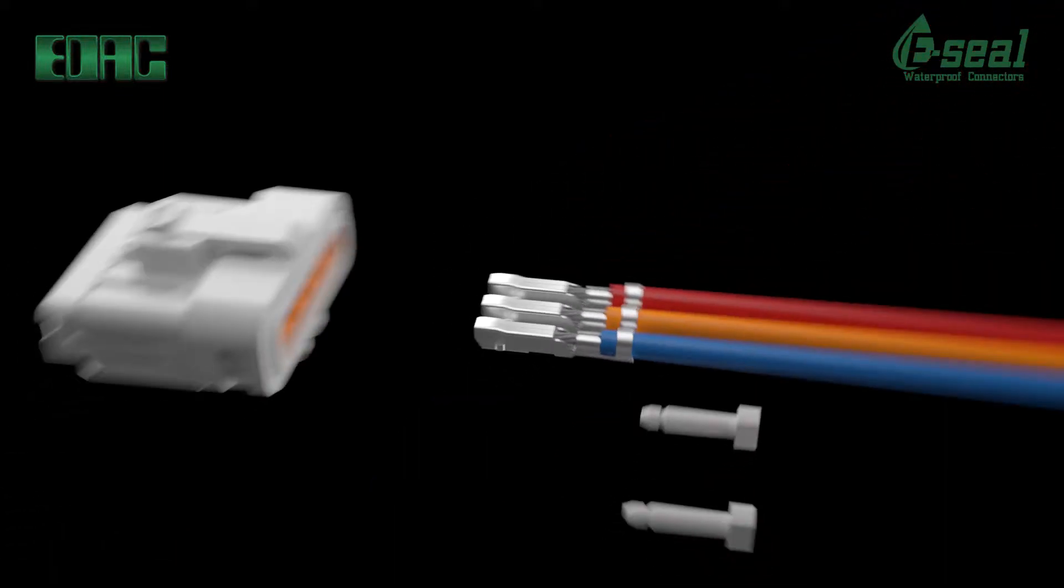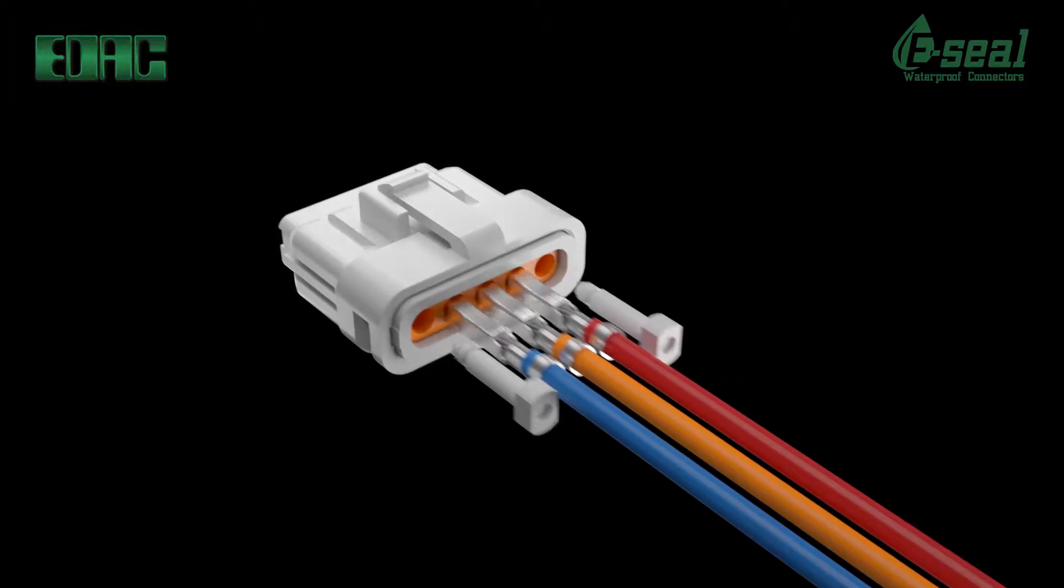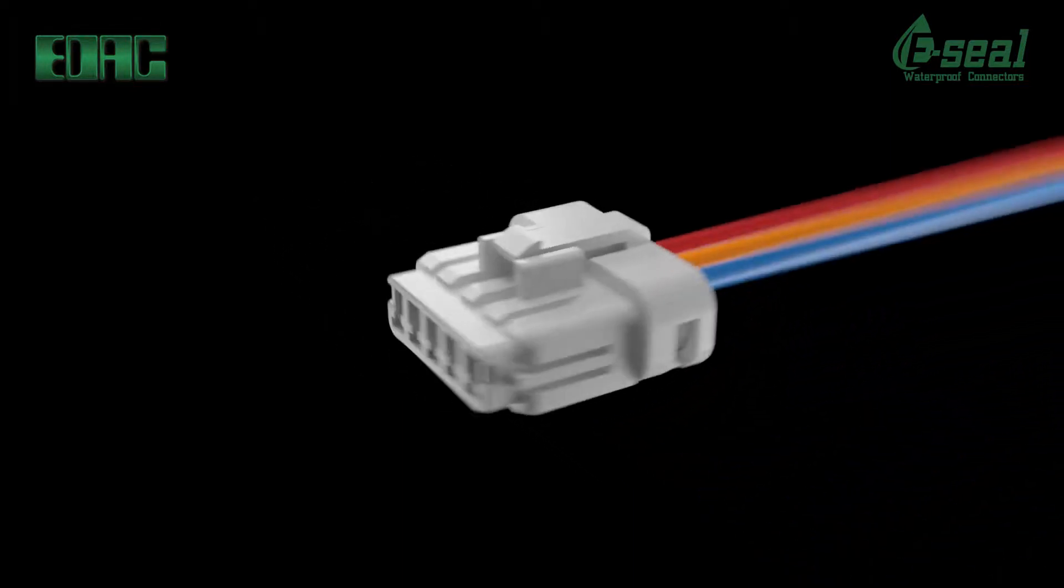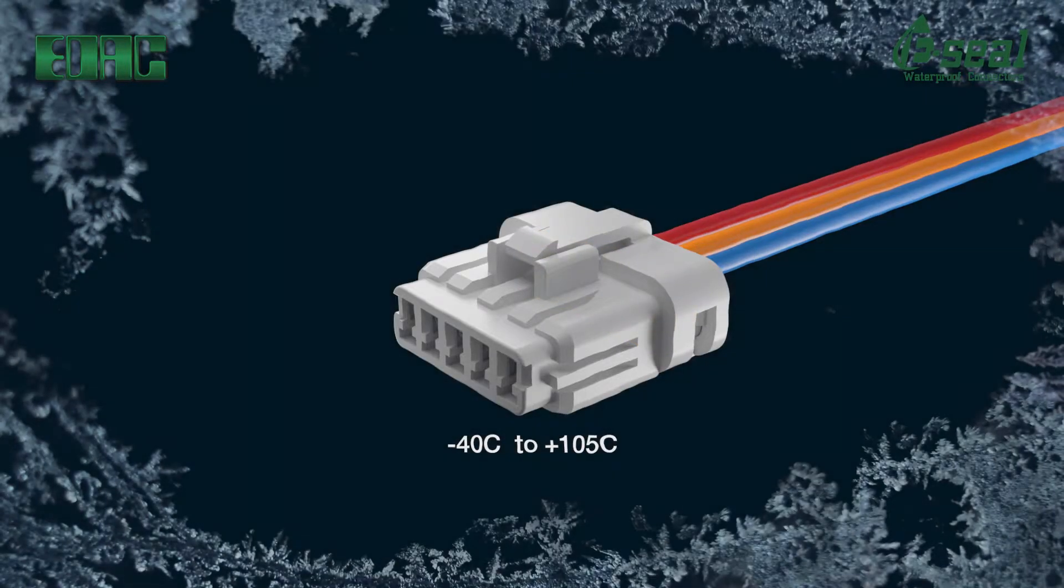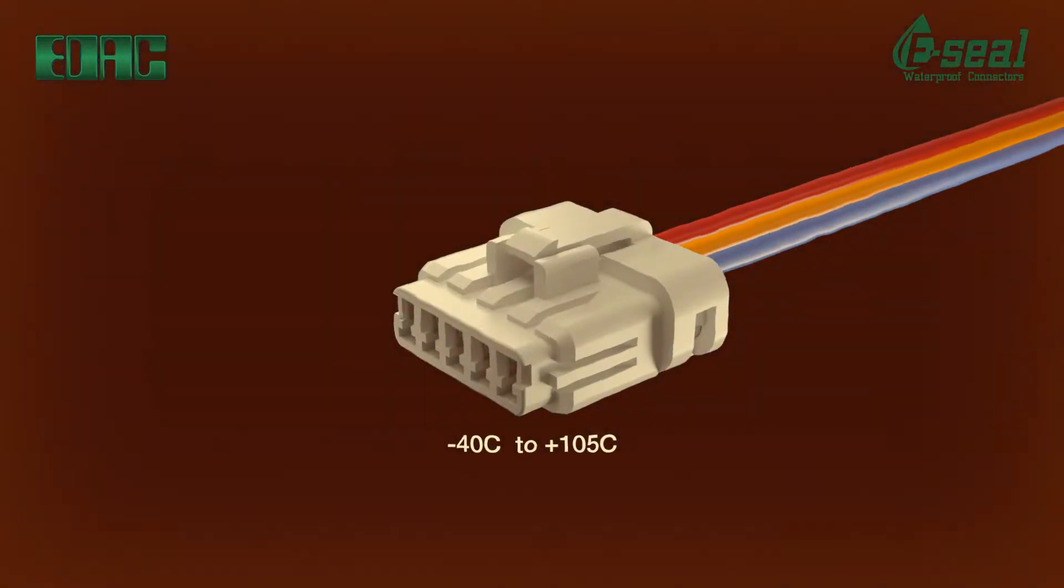Insulators are made in durable PBT UL94VO material and contacts in phosphor bronze with tin plating combined with high grade silica rubber seals that provide for solid performance in harsh environments. A wide operating temp range is covered from minus 40 degrees Celsius to 105 degrees Celsius.